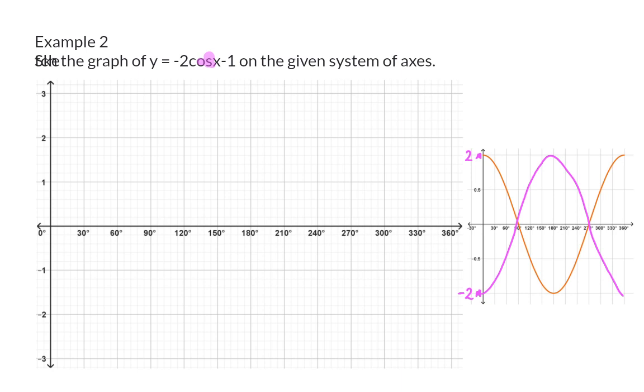And now we get to our second transformation, which is the minus 1 at the end, which means that this whole graph moves one unit down. So, each one of the original important coordinates will now move one unit down, which means our minimum is now at minus 3 and our maximum will now be at 1.